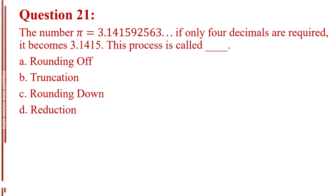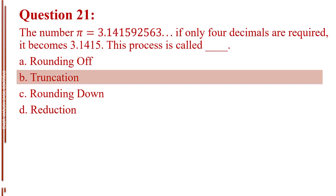Question number twenty-one. The number pi equals 3.141592563 and so on. If only 4 decimals are required, it becomes 3.1415. This process is called blank. Letter A, rounding off. Letter B, truncation. Letter C, rounding down. Letter D, reduction. The answer is Letter B, truncation.